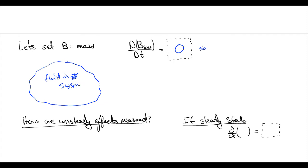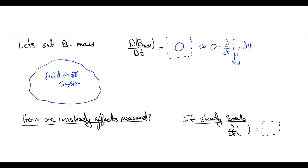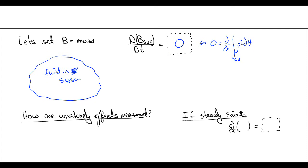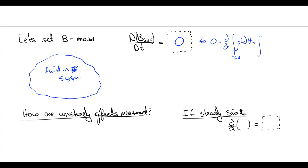So we can now write the Reynolds transport theorem as zero, favorite number in all of engineering, is equal to d dt, the rate of change of, we're going to integrate over our control volume in order to find the amount of our density integrated over our volume. Because remember B, if our capital B is mass, our little b, which is mass per mass, is going to be equal to one. So it's actually literally one times rho. Plus integral over our control surface CS of rho times one, because our B is equal to one, times our V dot n hat dA.